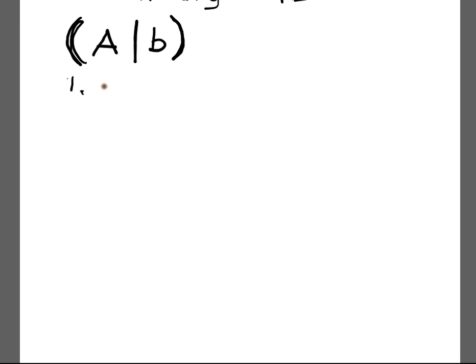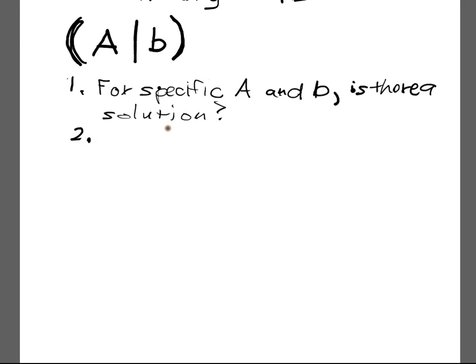But what do we want to know? Well first, if we have a particular A and B, for specific A and B, is there a solution? Is there at least one solution? For specific A and B? And then how many? If there's one, are there more? Or is it just one? And also, how do we compute?